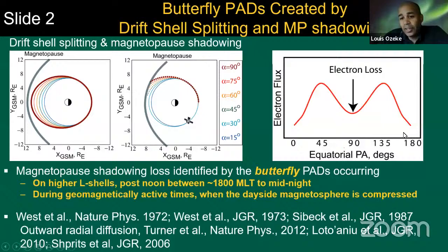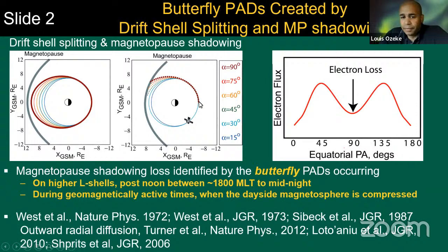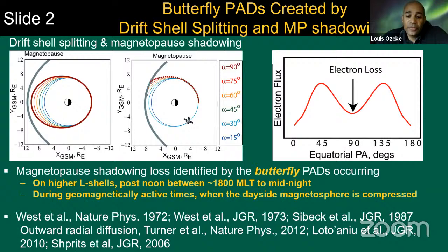In general, this process should occur on the higher L-shells, because that's where the trajectories are most likely to intersect the magnetopause. And the resulting butterfly pitch angle distributions are more likely to be observed between around 18 MLT and midnight by spacecraft on these high L-shells. Again, this effect is most likely to occur during geomagnetically active times, when the magnetosphere is compressed on the day side and the magnetopause moves inwards to lower L-shells, which can intersect the trajectories.